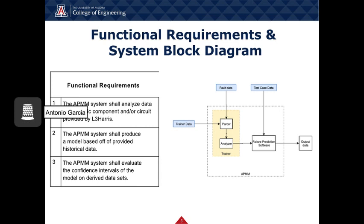The APMM system block diagram depicts the two main subsystems: the trainer, consisting of a parser and analyzer whose inputs are the training data and fault data, and a separate failure prediction software with an output report and additional test case data as an input. There are three functional requirements to define the program's core capabilities. First, the ability to analyze data from the NXT series transponder. Second, the creation of a model based on historical fault data. And third, the ability to validate the accuracy and confidence of the avionics predictive maintenance model.